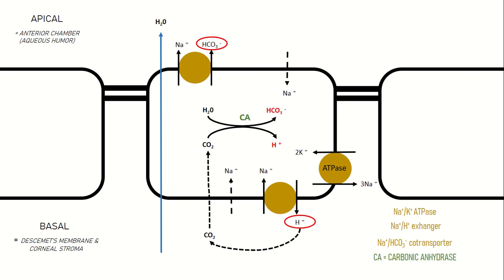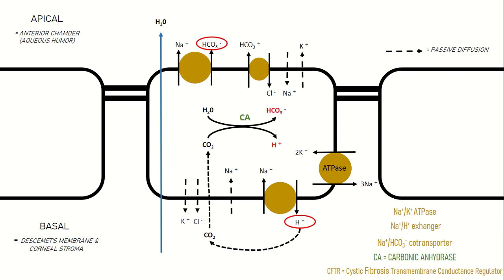In addition to the transport of water from stroma to aqueous, there is also a net flux of ions between stroma and aqueous, namely chloride and potassium. Their movement is made possible by the cystic fibrosis transmembrane conductance regulator and passive diffusion channels located both basally and apically.